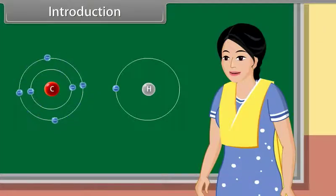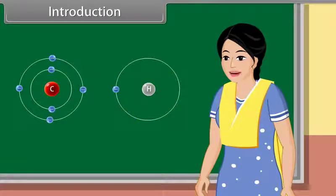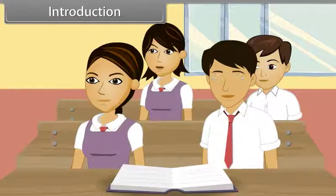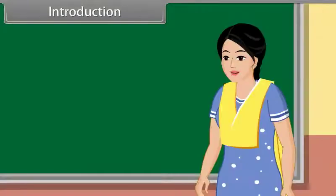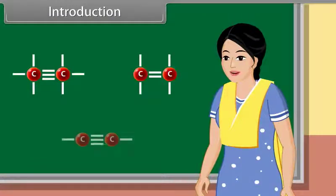Organic chemistry is the branch of chemistry that involves the study of carbon and hydrogen-containing compounds. The carbon-carbon atoms are attached by single bond, double bond, or triple bond, and the functional group present on the organic compound decides its chemical nature.